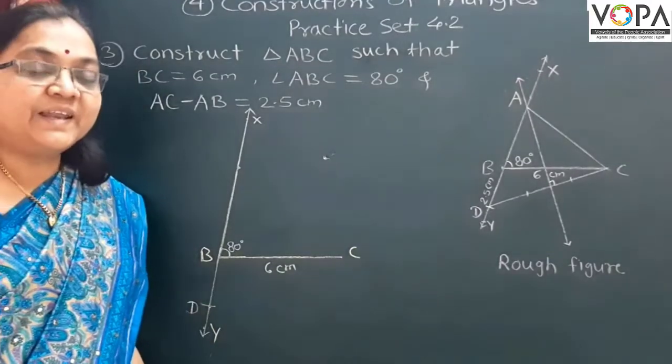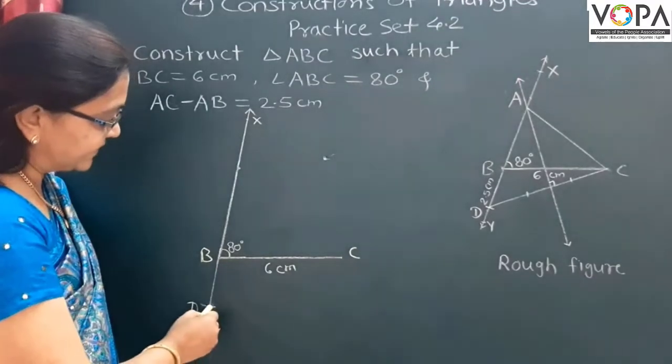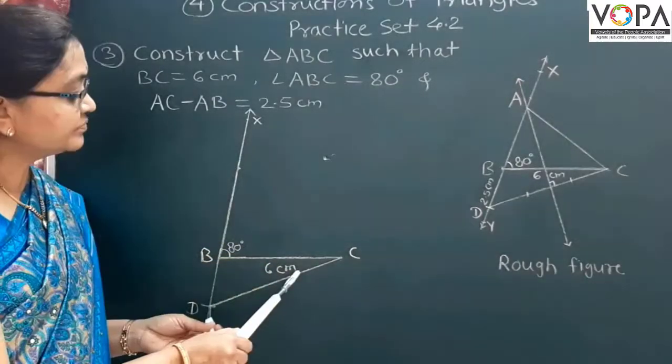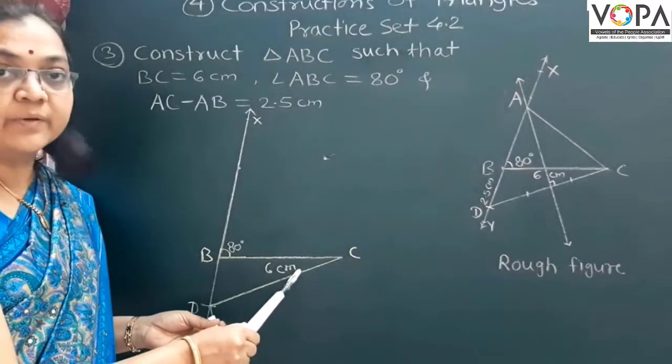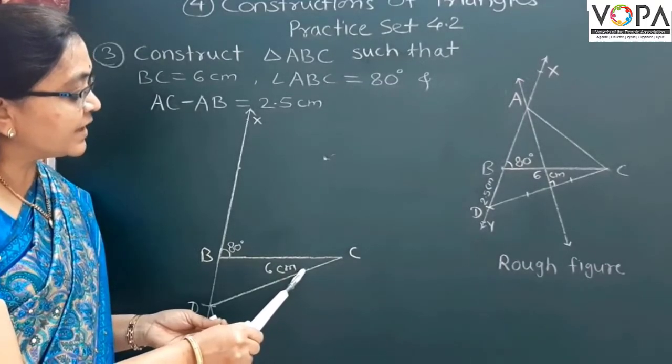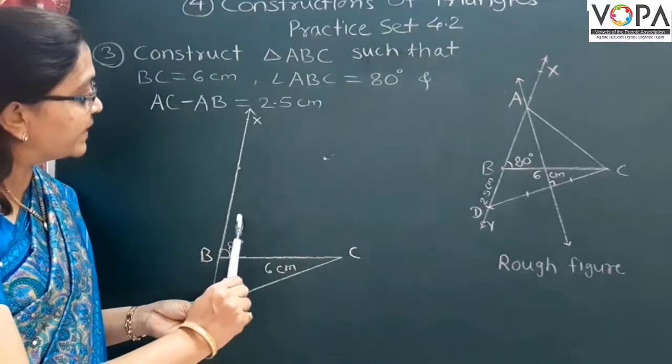The next step is to draw segment CD. Then, next step is to draw the perpendicular bisector. Take distance more than half of that segment in your compass.